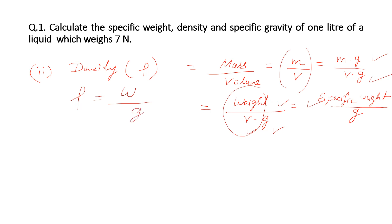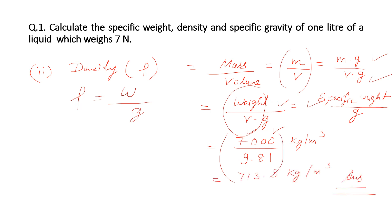We use this equation to solve the second part. We have the value of specific weight as seven thousand newton per meter cube, and acceleration due to gravity is 9.81 m/s². After solving this expression, we get the final answer: 713.5 kg per meter cube.